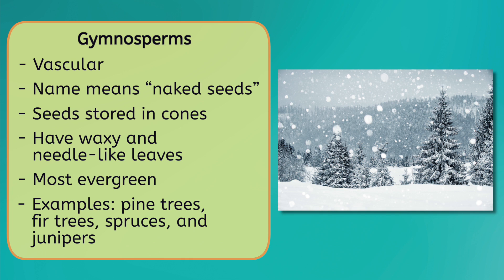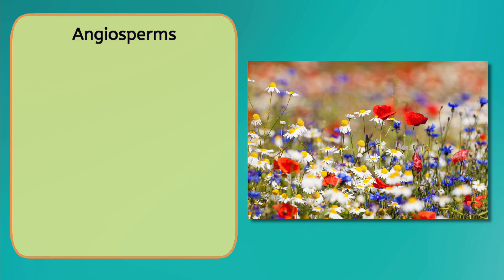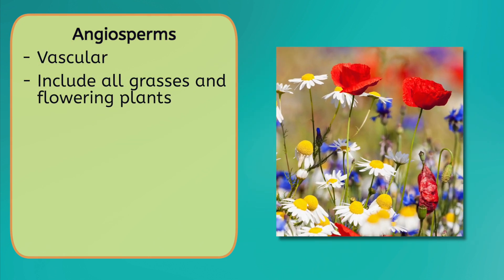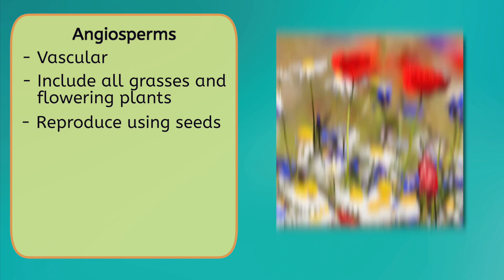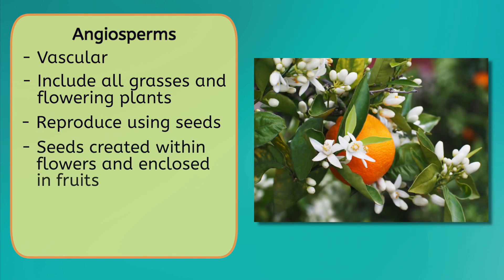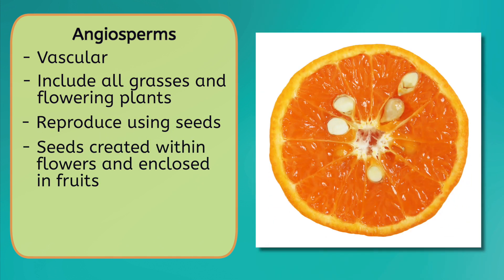This brings us to our final phylum, angiosperms, which are vascular and include all grasses and flowering plants. Like gymnosperms, angiosperms also reproduce using seeds. However, their seeds are created within flowers and enclosed in fruits.